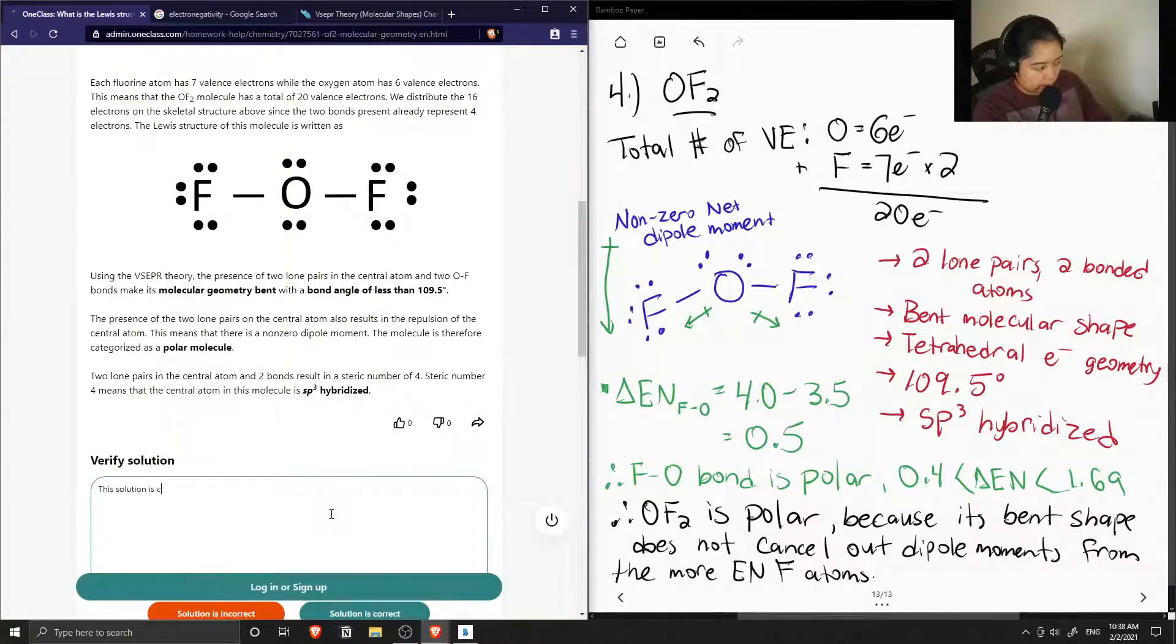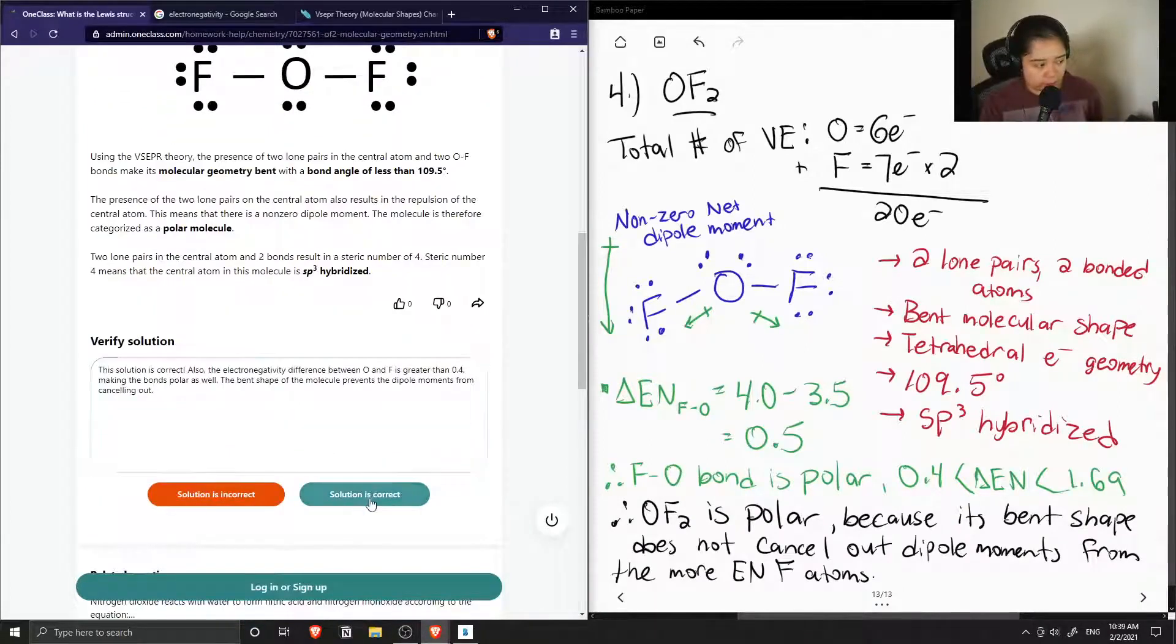This solution is correct. Also, the electronegativity difference between oxygen and fluorine is greater than 0.4, making the bonds polar as well. The bent shape of the molecule prevents the dipole moments from canceling out. I'm just going to add that as well. This solution is correct. Thank you.